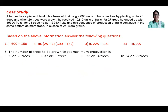Part five: the number of trees to be grown for maximum production. When x = 7.5, the number of trees is 25 plus 7.5 = 32.5. So the answer will be either 32 or 33.